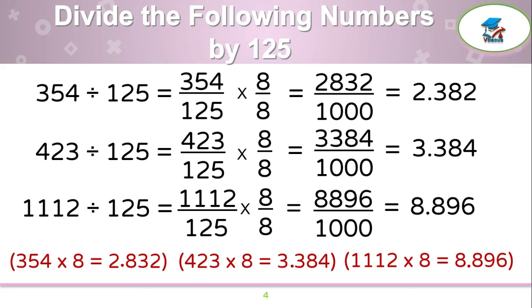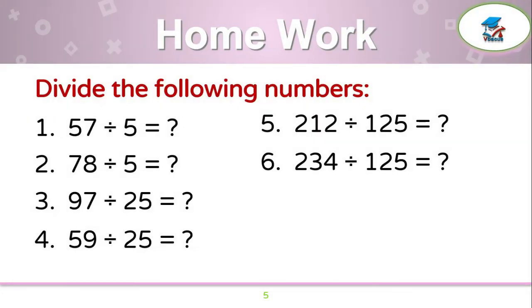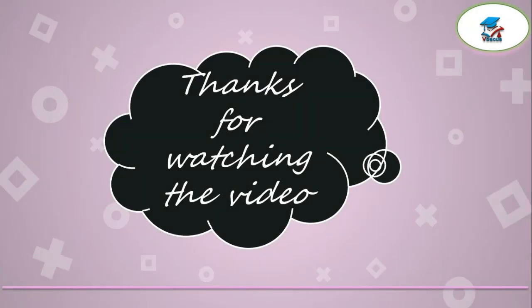It is a very easy trick and you can do it very quickly. There is a homework for you: divide the following numbers — 57 by 5, 78 by 5, 97 by 25, 59 by 25, and 212 by 125 — and write your answers in the comment box. If you want to watch more videos, please do not forget to share and subscribe. Thank you.